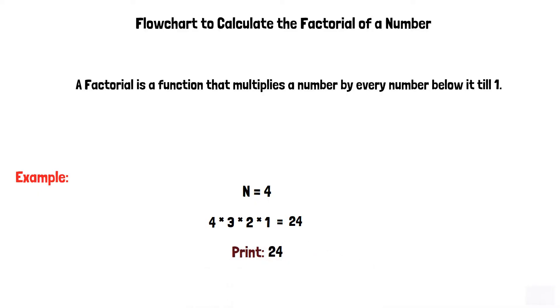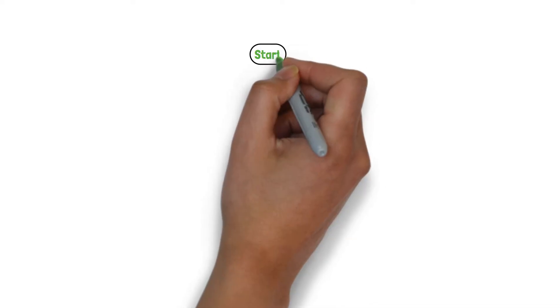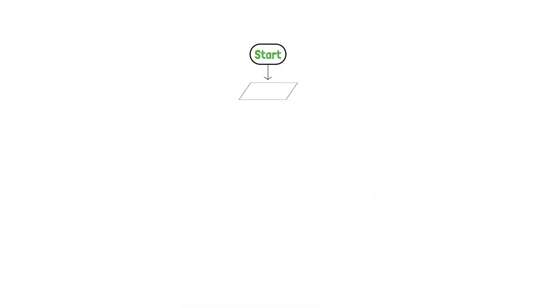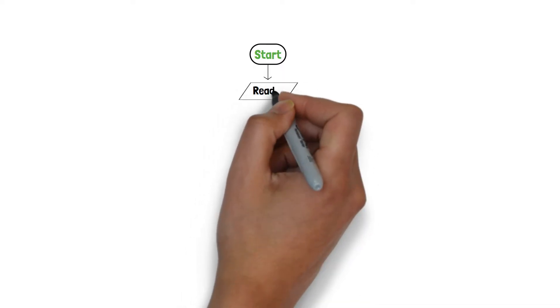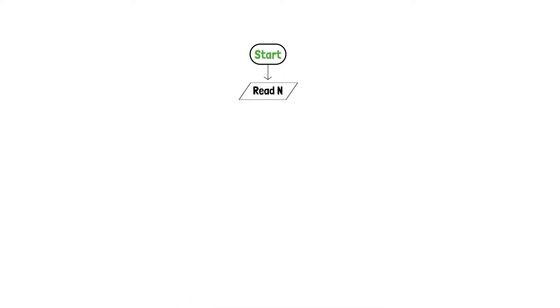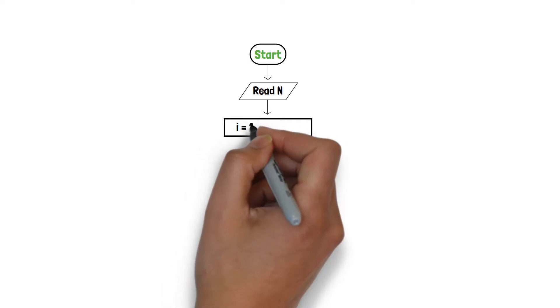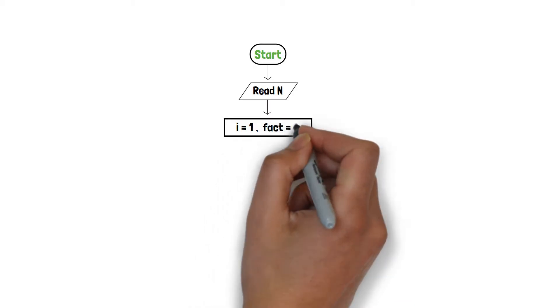So now, let's begin to construct the flowchart. At first, we will draw a starting terminator to indicate the starting point of the program. Now, we will accept an integer from the user and store it in variable n using an input component. Furthermore, a process box is implemented in which two variables are assigned with 1.